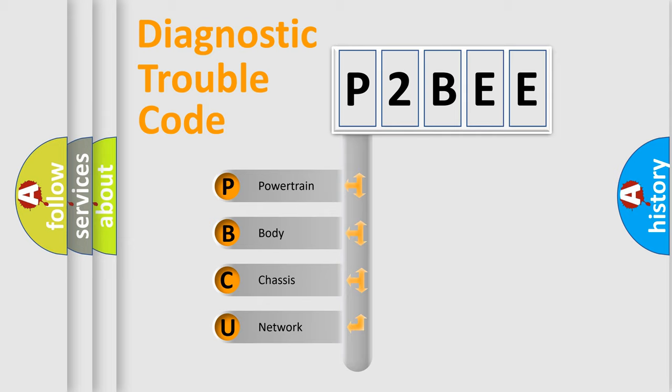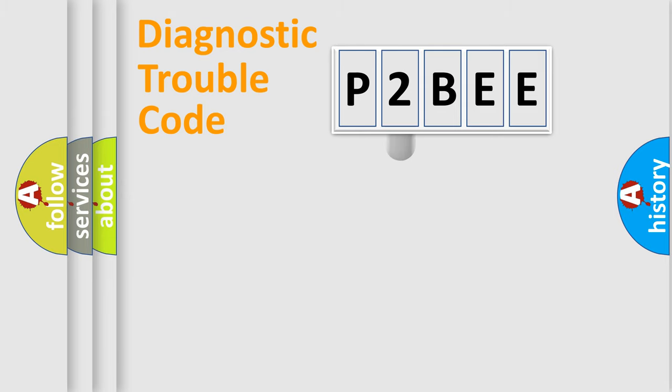We divide the electric system of the automobile into four basic units: Powertrain, Body, Chassis, and Network. This distribution is defined in the first character code.